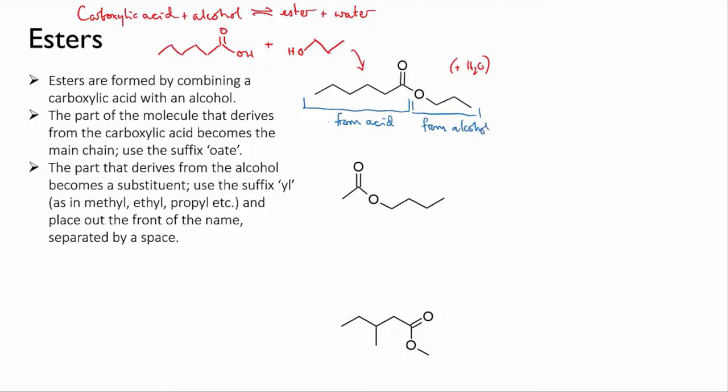So to name this, we call the part that used to be the carboxylic acid the main chain, and it takes the suffix -oate. So this part of the molecule is called hexanoate.